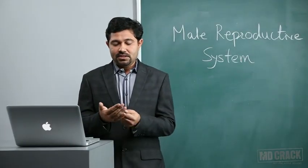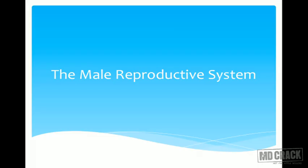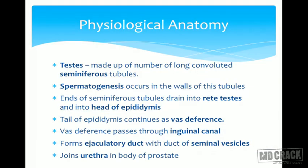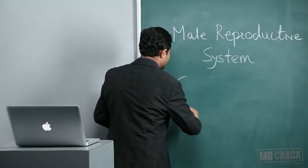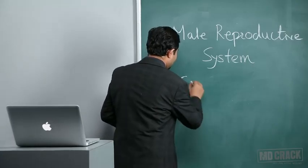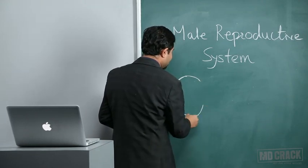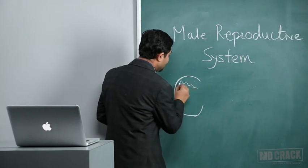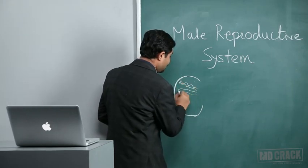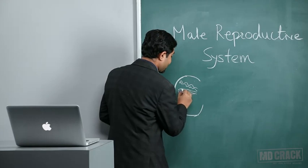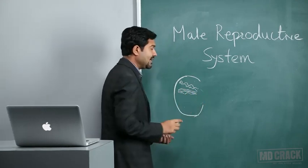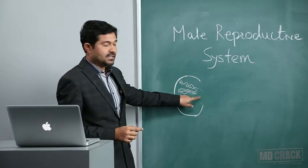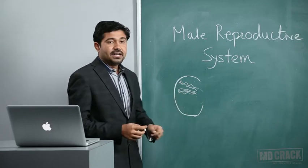Hello students, welcome to the new session of physiology. We will deal with the male reproductive system. First, in very short, we will revise the physiological anatomy. The testis, if you look at the cross section, is formed by a number of long convoluted tubules, and these tubules ultimately merge at what is called the rete testis. These are the seminiferous tubules.